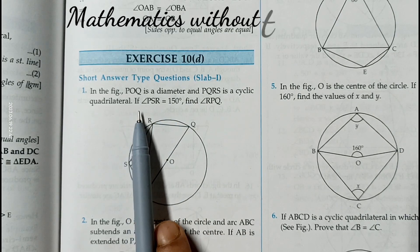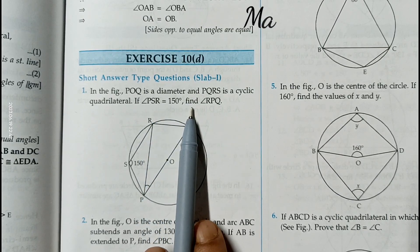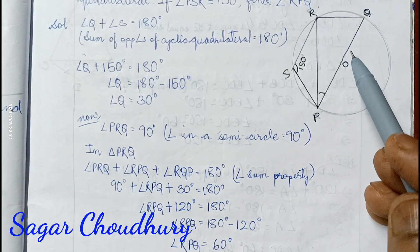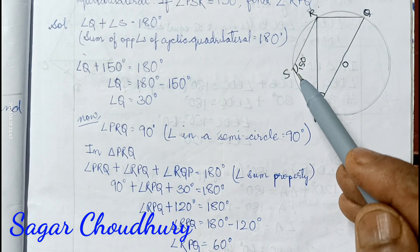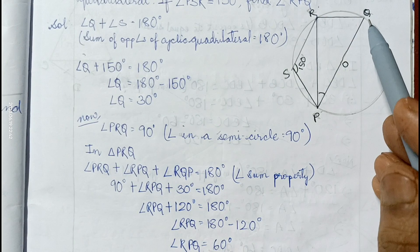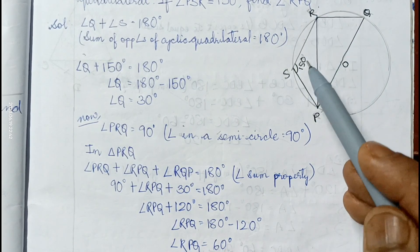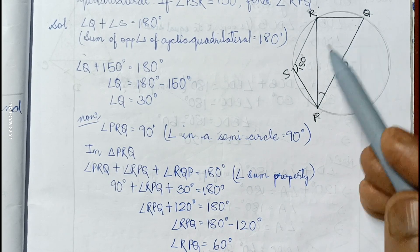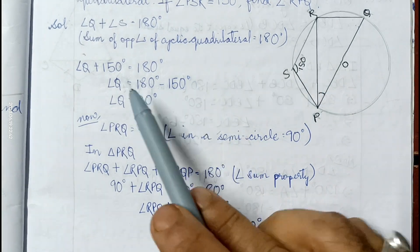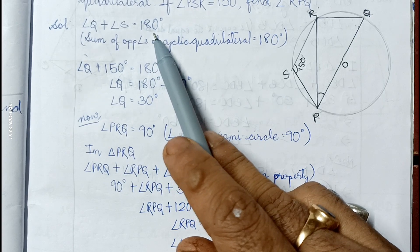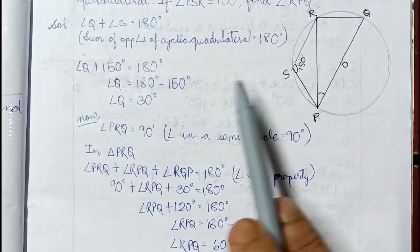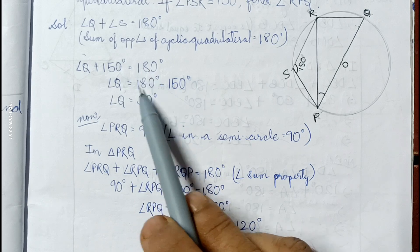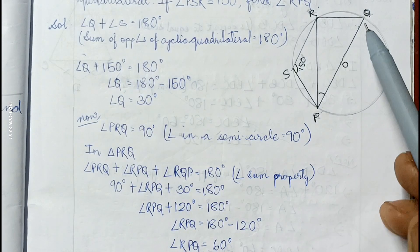If angle PSR is 150 degrees, find angle RPQ. Here PQRS is a cyclic quadrilateral, angle PSR is given as 150 degrees, and we have to find angle RPQ. Since it is a cyclic quadrilateral, the sum of opposite angles is 180 degrees, so angle Q plus angle S equals 180. Angle Q plus 150 equals 180, therefore angle Q equals 30 degrees.